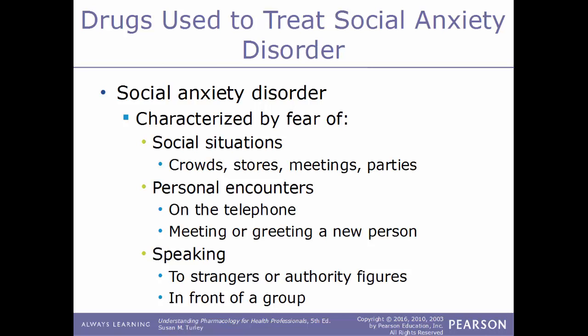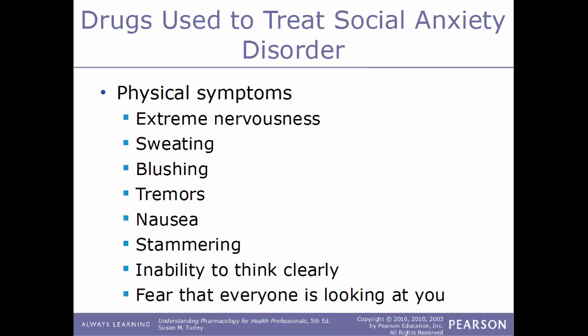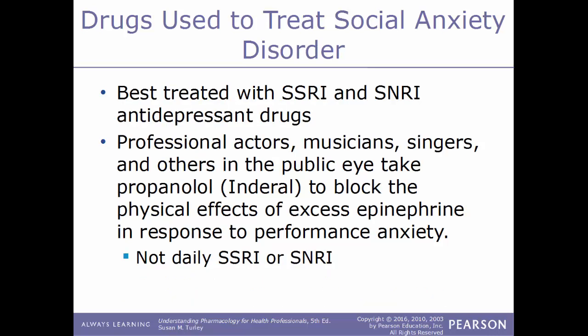Drugs used to treat social anxiety disorder address a condition characterized by fear of generic social situations like crowds, meetings, or parties; personal encounters; talking on the phone; meeting new people; and speaking in front of groups. Physical symptoms include extreme nervousness, sweating, blushing, tremors, nausea, stammering, and inability to think clearly. This condition is best treated with SSRIs and SNRIs. Professional actors and musicians may take propranolol (Inderal) to block the physical effects of excess epinephrine in response to performance anxiety, rather than a daily SSRI or SNRI.